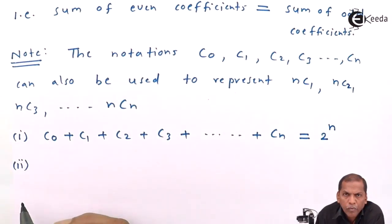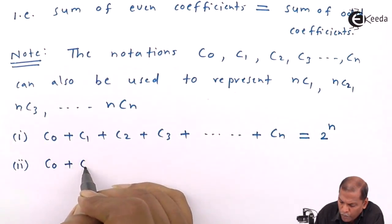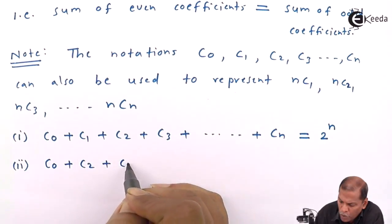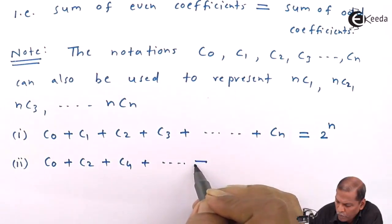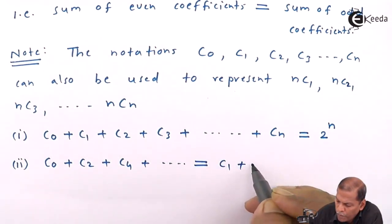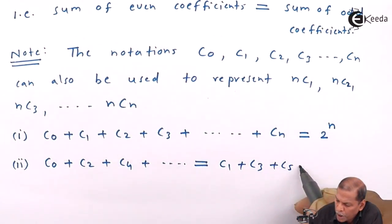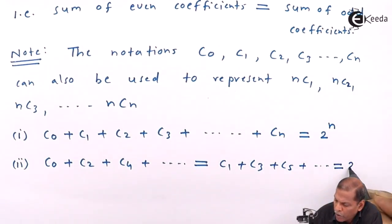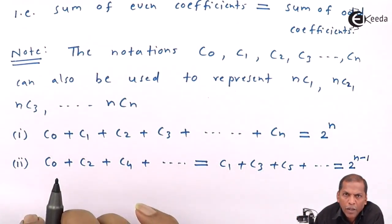The second result can also be stated as: C0 + C2 + C4 + ... equals C1 + C3 + C5 + ..., and that equals 2^(n-1).